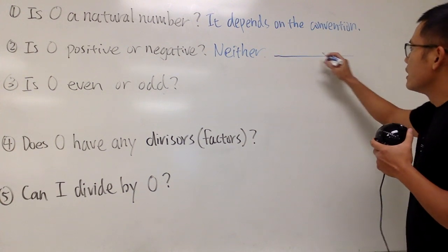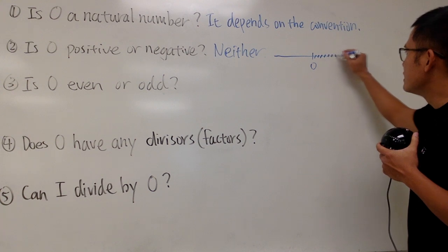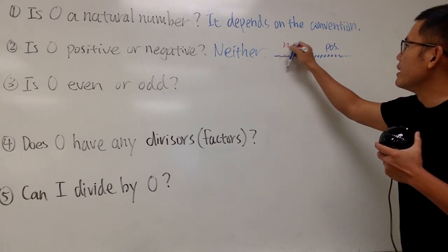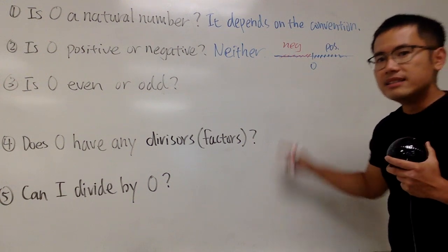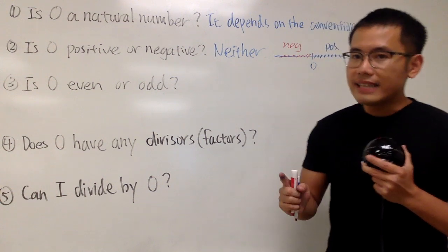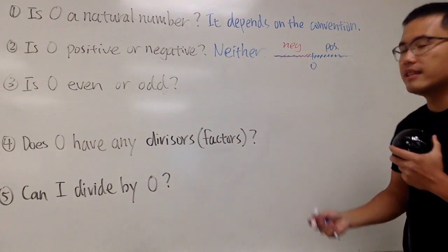Well, take a look at the number line. Right in the middle is zero. Anything toward the right, this right here is positive. Anything toward the left, this right here is negative. And zero is right in the middle. And some people will say zero is neutral. I didn't say natural. Zero is neutral. It's not positive and it's also not negative.